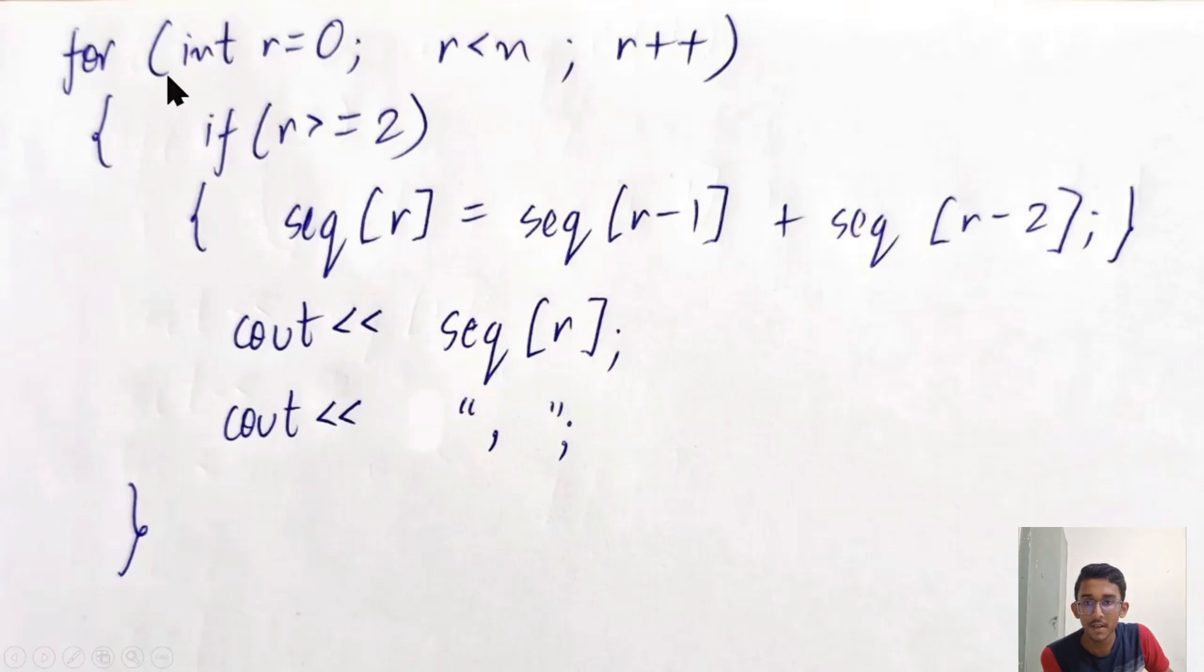Therefore, I've created an additional if condition here. So I've done if r is greater than or equal to 2 for which the formula is true. Sequence of r is sequence of r minus 1 plus sequence of r minus 2.